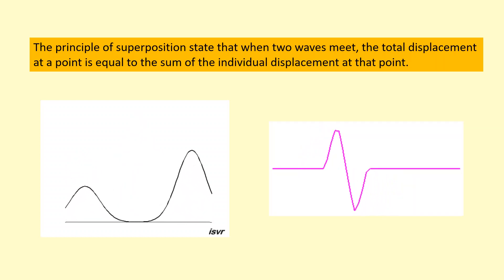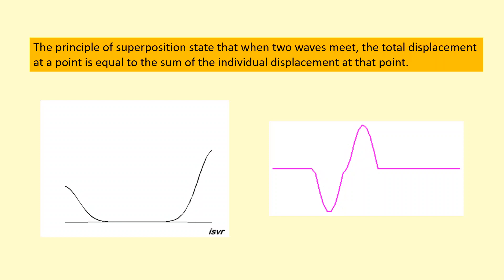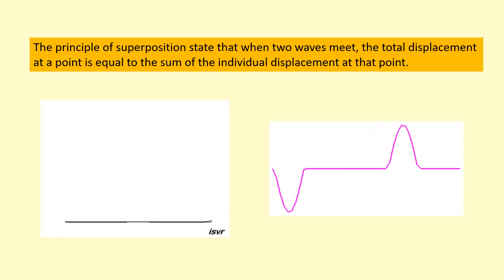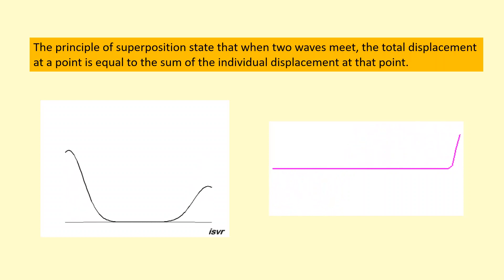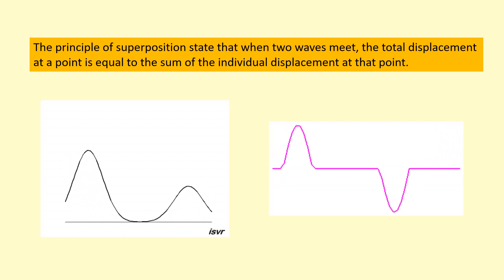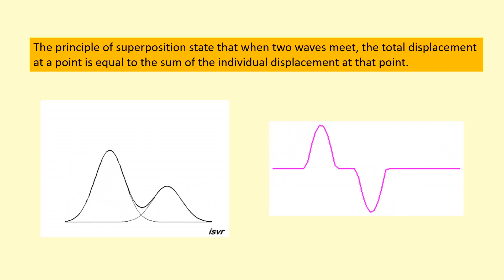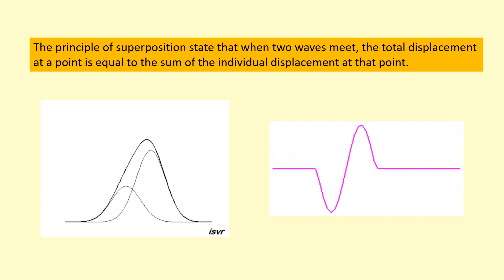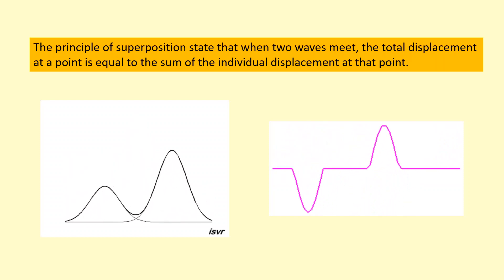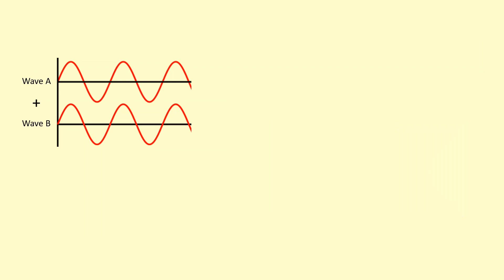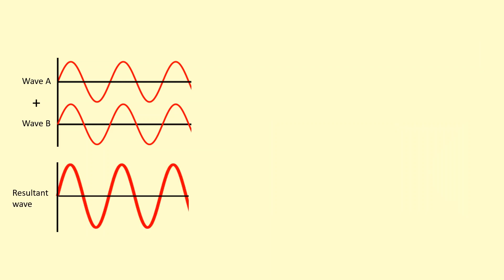These two waves have one positive and one negative displacement. When they meet, they cancel out because they add together and the displacement at a point equals zero — you can see it canceled out and gave zero. When two waves meet like this and they're in phase, they add up to give a bigger resultant wave. This is called constructive interference.